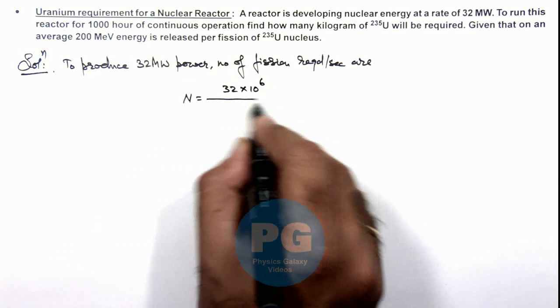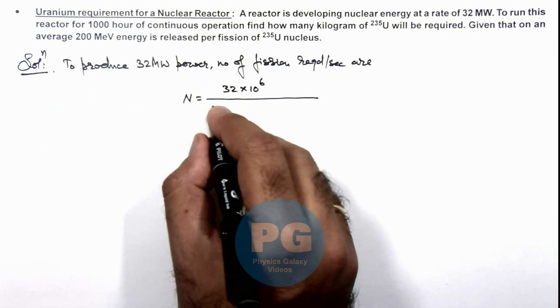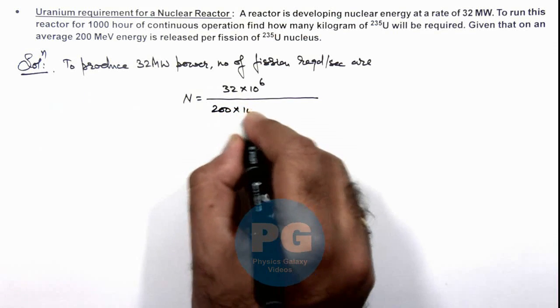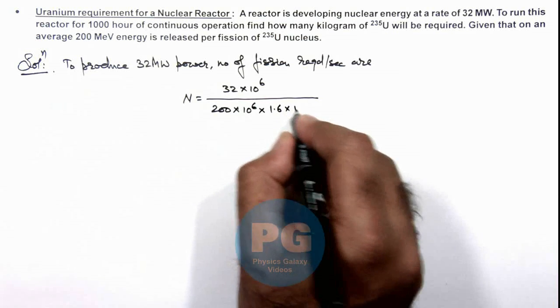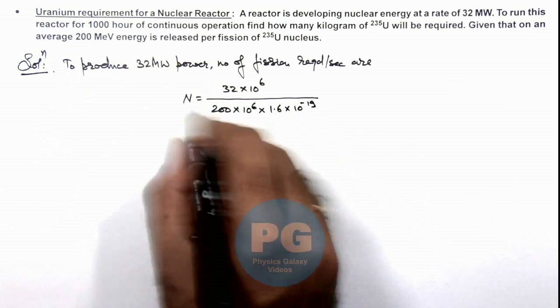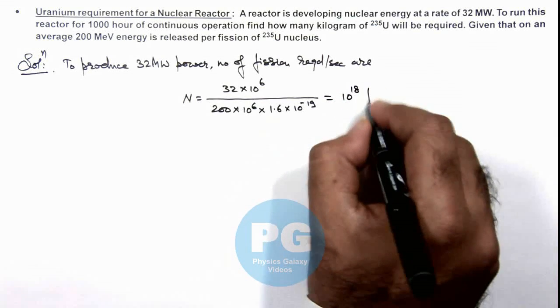Divided by the energy, 200 million electron volts per fission is 200 × 10^6, multiplied by 1.6 × 10^-19. On simplifying, this gives us 10^18 fissions.